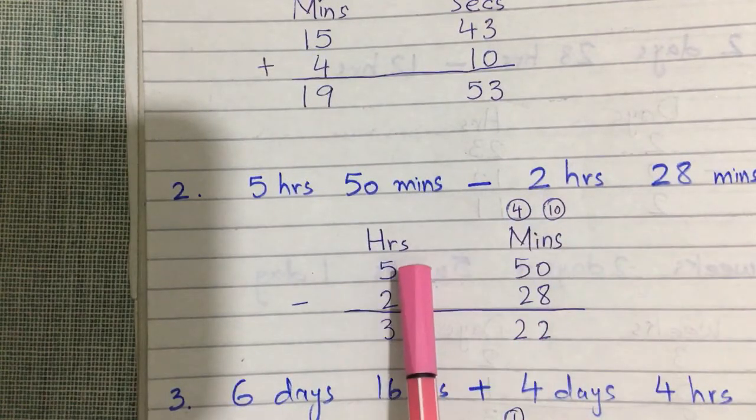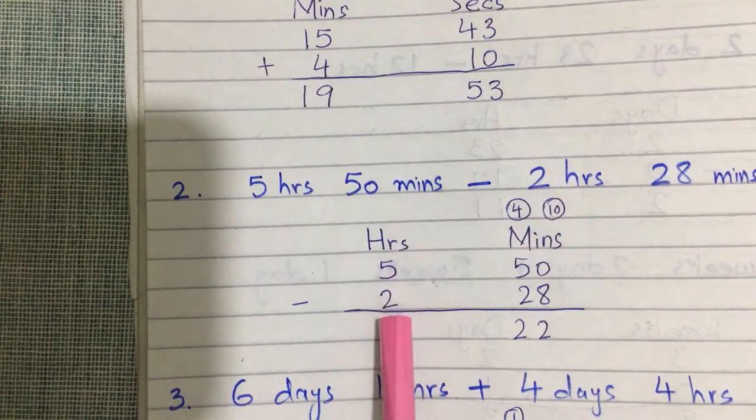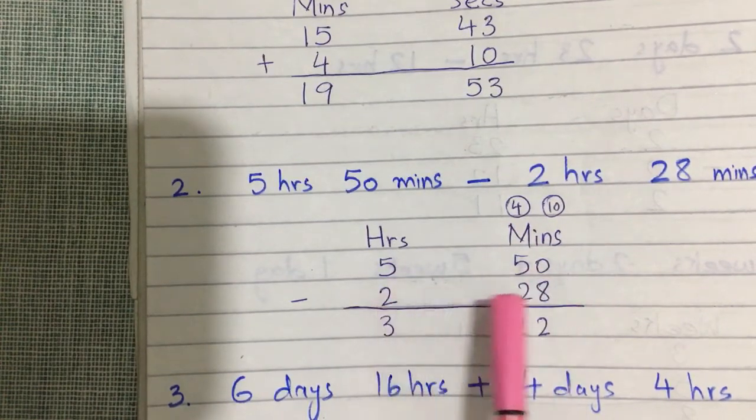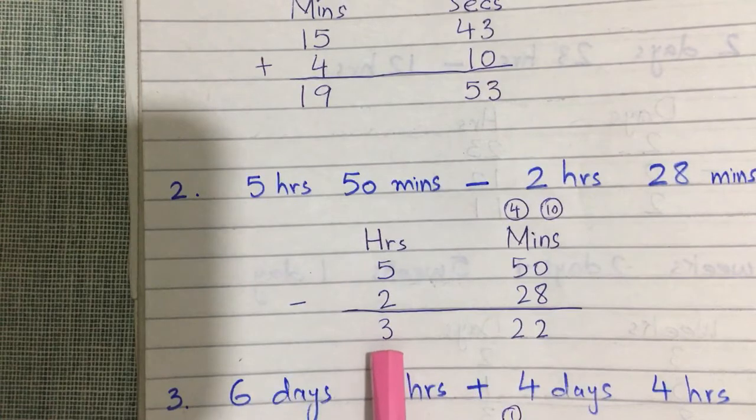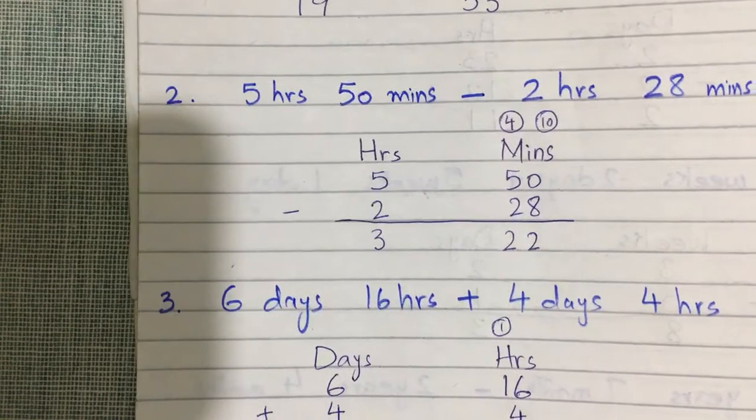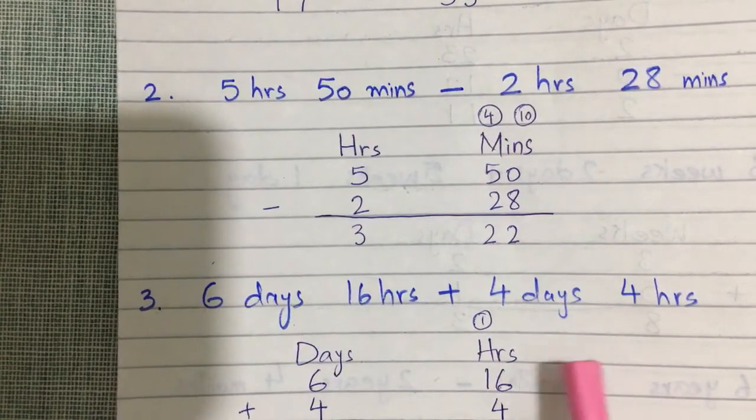Number two is 5 hours and 50 minutes minus 2 hours and 28 minutes. Now subtract hours from hours and minutes from minutes. So 5 hours 50 minutes minus 2 hours and 28 minutes. Answer is 3 hours and 22 minutes.